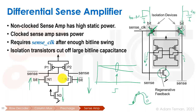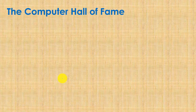We can implement this with either a current-mirror type or a cross-coupled inverter type sense amplifier — this is a deep topic on its own. The most important requirement is a low-noise sense amplifier with good ability to detect the output.